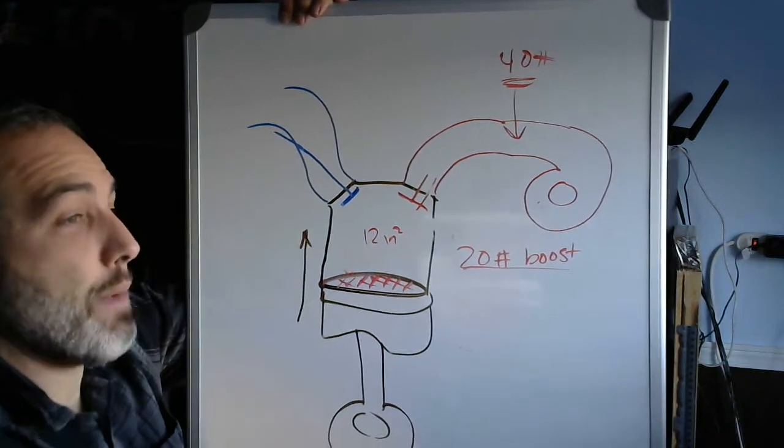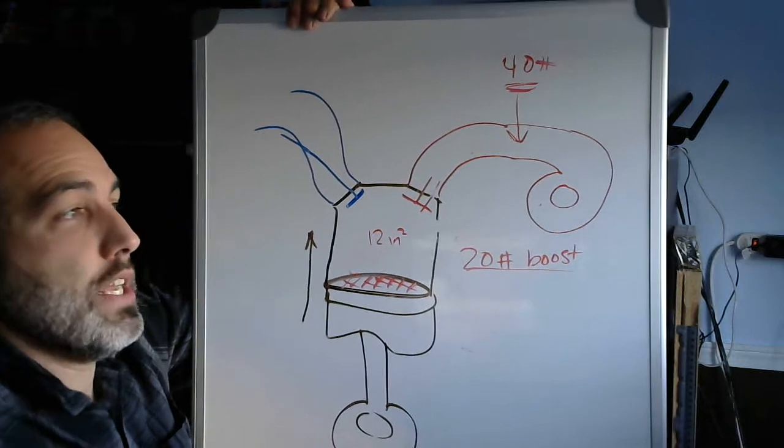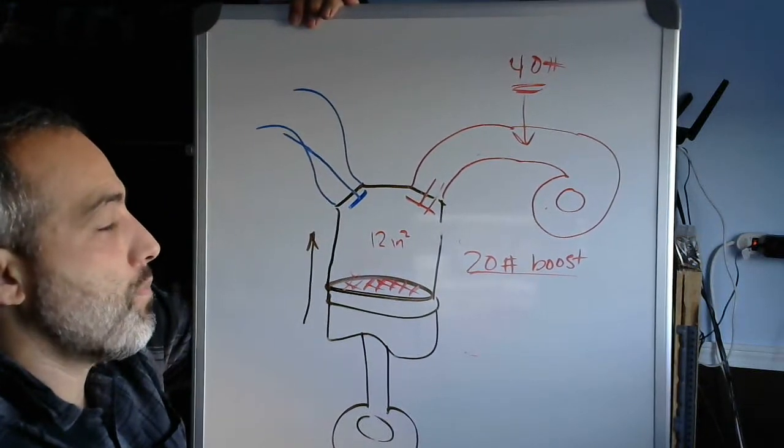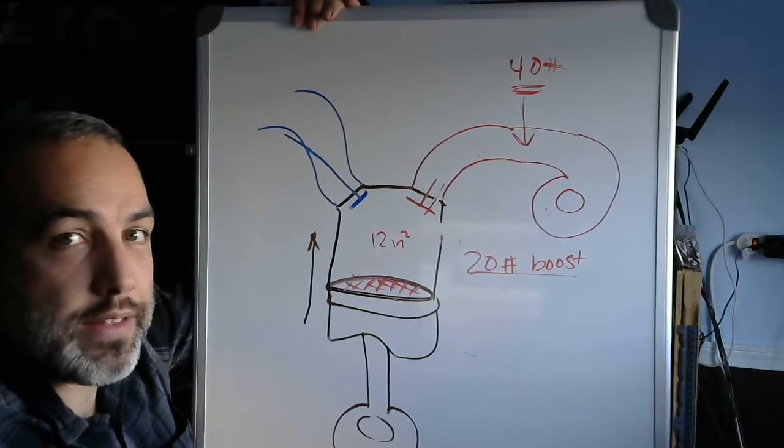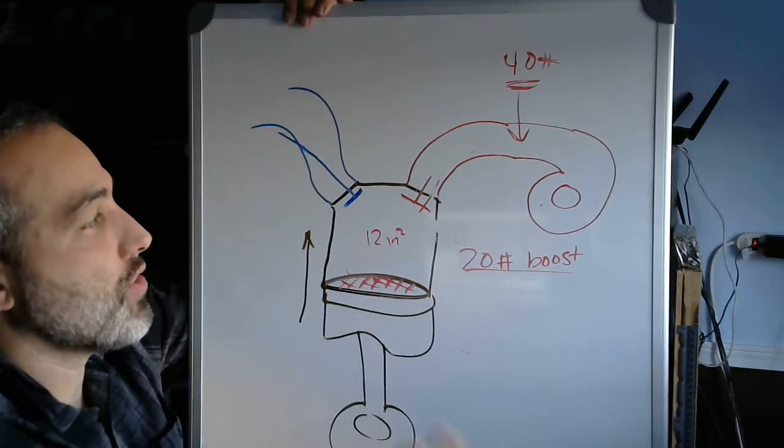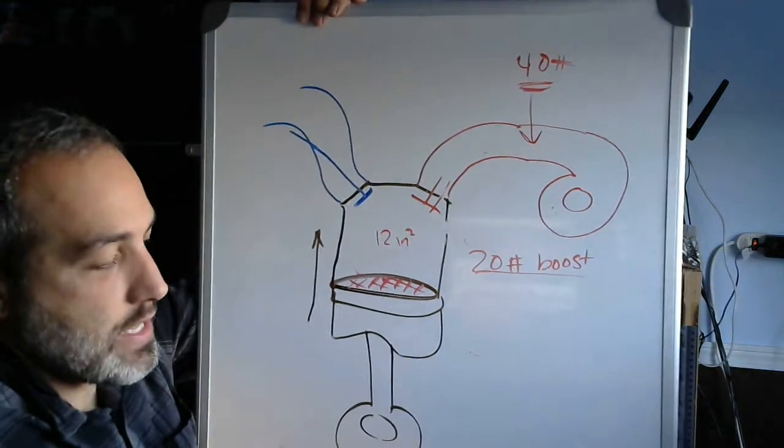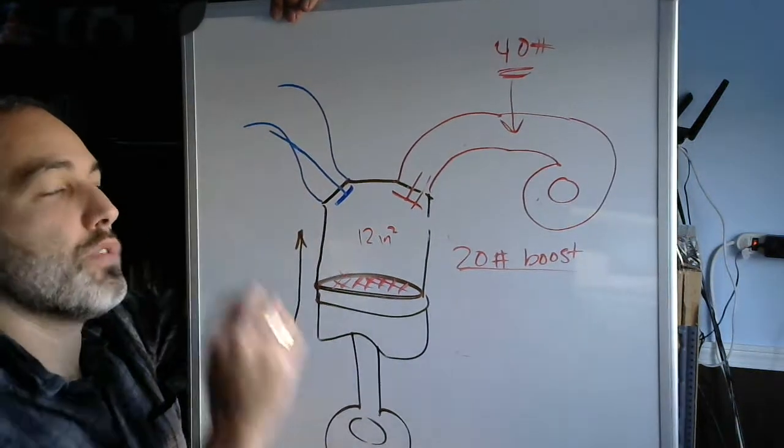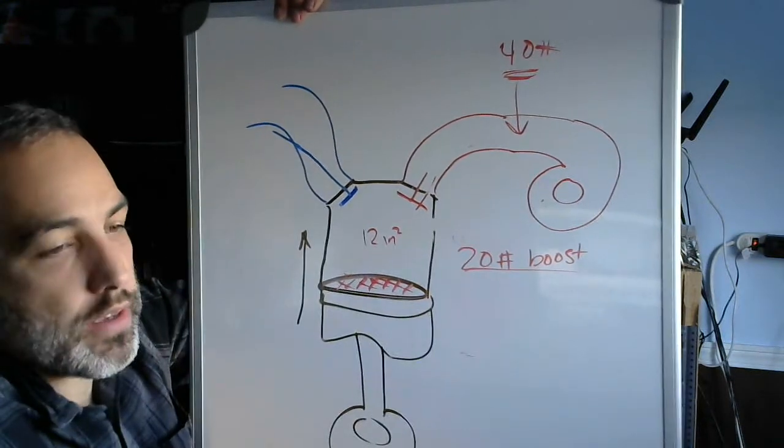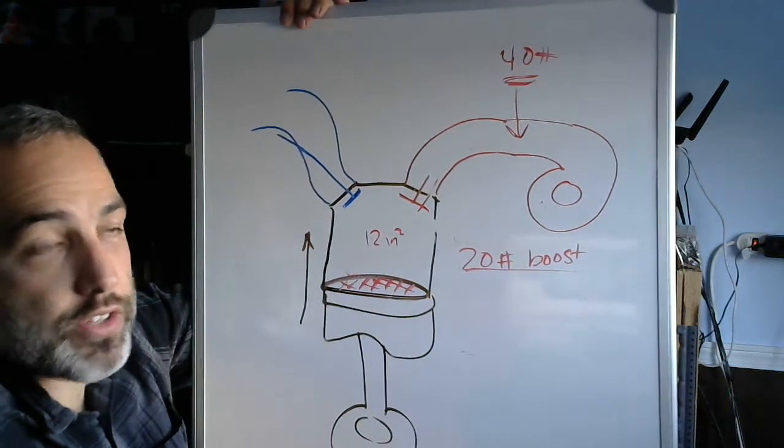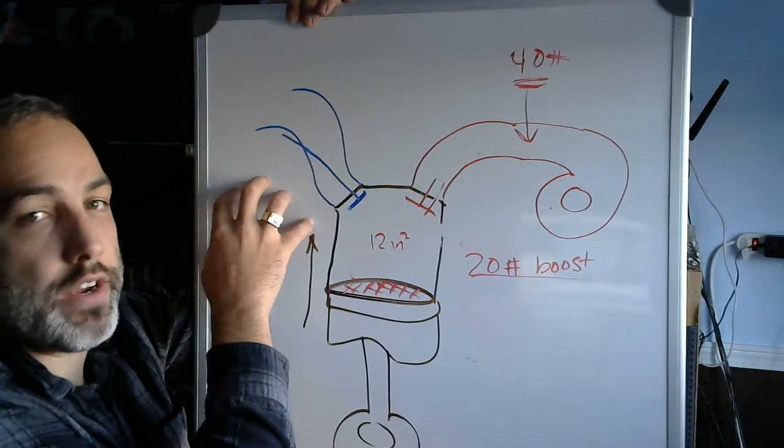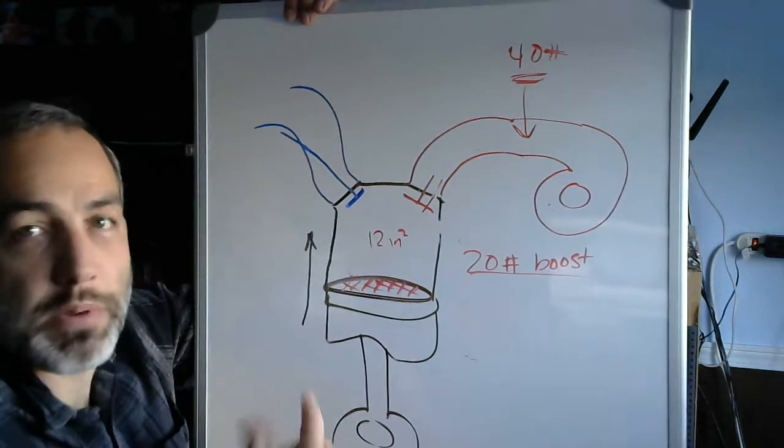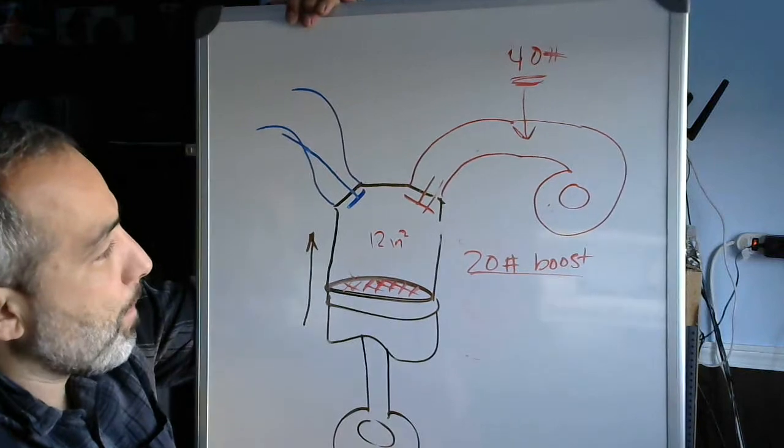So during valve overlap on pretty much any engine that has any significant overlap, you almost always have exhaust that's pushed into the intake port. Now, in the case of supercharger, that's not the case. Supercharger usually you have a good amount of boost here and a lower exhaust manifold pressure. But in the case of NA cars, you often have a vacuum over here and atmospheric or higher pressure over here. So you still push a little bit in, especially on idle.